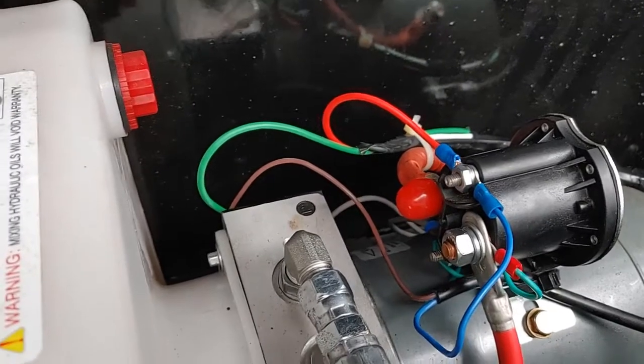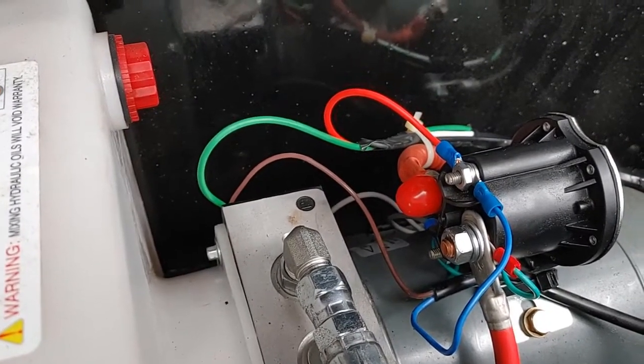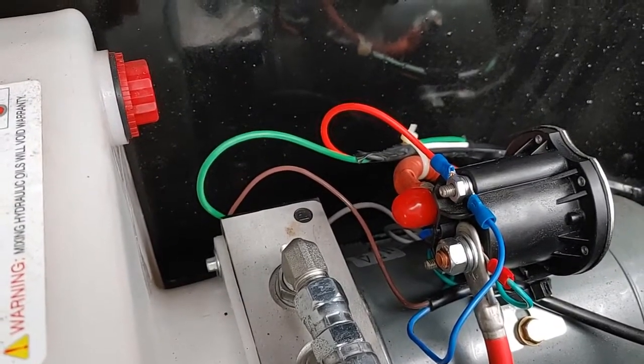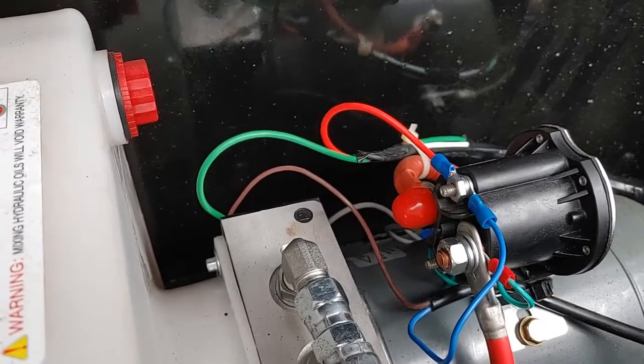So really just two wires: the red wire which was the up, and the green wire which was for the solenoid or the relief valve on the pump or on the unit.